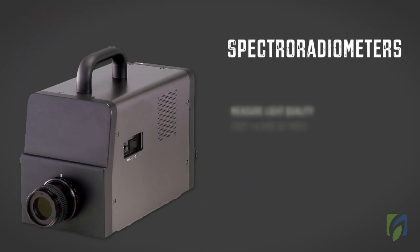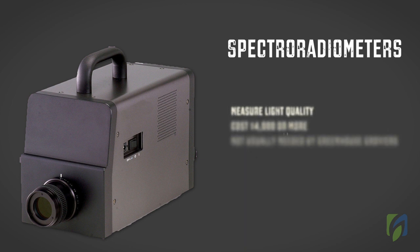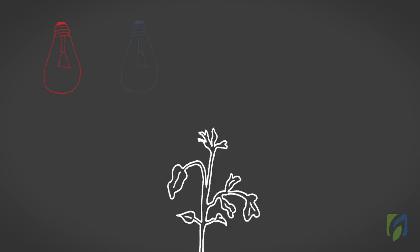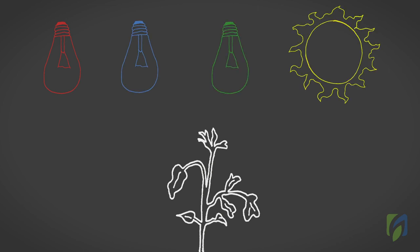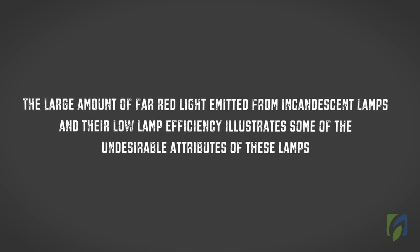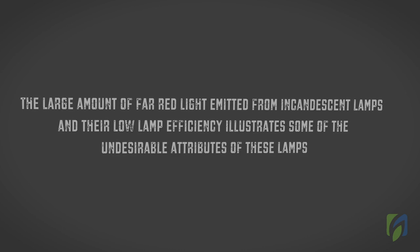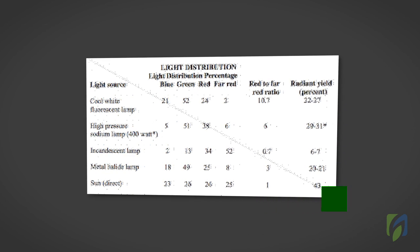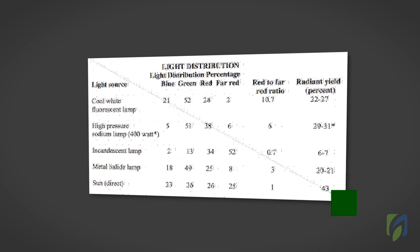Spectroradiometers are used to measure light quality. These instruments can cost $4,000 or more. Greenhouse growers don't usually need to measure light quality because it's relatively fixed for each light source, whether natural sunlight or artificial light from lamps. The distribution of light and the red to far red ratio varies between light sources. Knowing these values can be useful to predict the impact of different light sources on plant growth. The large amount of far red light emitted from incandescent lamps and their low lamp efficiency illustrates some of their undesirable attributes. The following chart shows differences in light quality based on light sources, and clearly indicates how one light source may have drastically different effects on different plants.